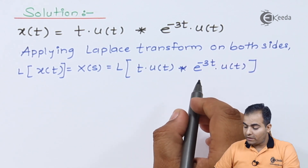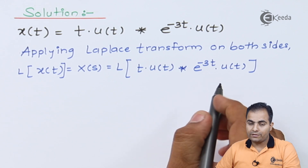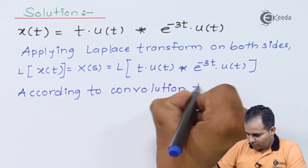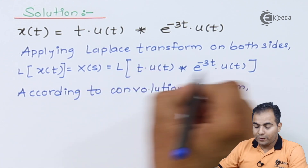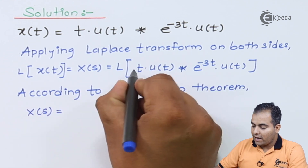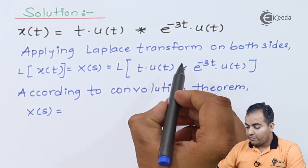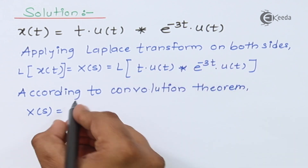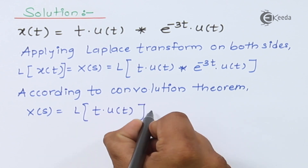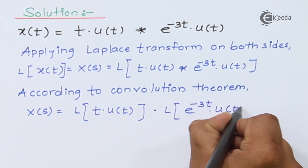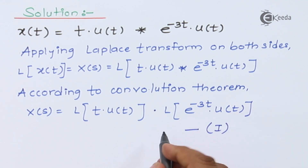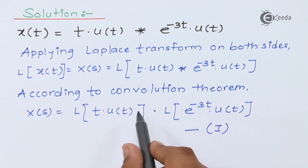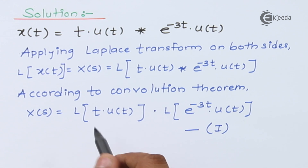According to the convolution theorem of the Laplace transform, X(s) equals the Laplace transform of the first function multiplied by the Laplace transform of the second function. We will find the Laplace transforms of both functions separately and then substitute both values into equation number 1. First, we find the Laplace transform of t·u(t).